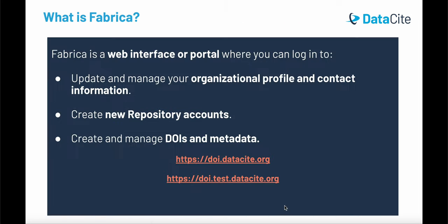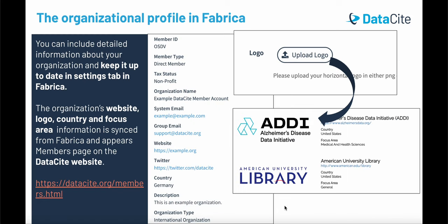Fabrica is a web interface or portal where you can log in to update and manage your organizational profile and contact information, create a new repository, and create and manage DOIs and metadata. One of the first things you'll do when you log into Fabrica is update your organization's profile. You can do this in the settings tab. Your organization's website, logo, country, and focus area will be synced from Fabrica to the members page on the Datasite website. Don't forget to upload your logo.